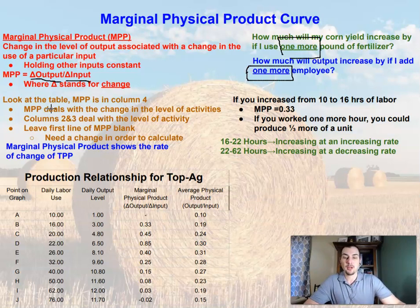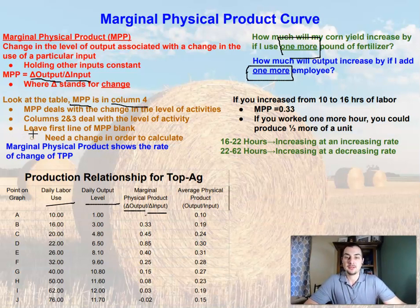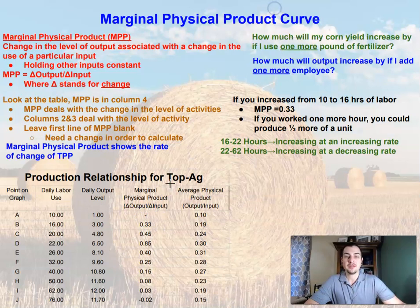Let's look at the table below. We have calculated marginal physical product in column four. Marginal physical product is the change in output divided by the change in input. Column two and three deal with the levels of activities — column two is the input, column three is the output. Anytime you're calculating marginal physical product, or any marginal value like marginal utility, you always leave the first line of marginal physical product blank. You can see I've left that first line blank here.